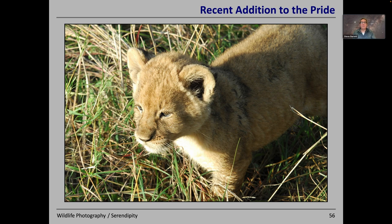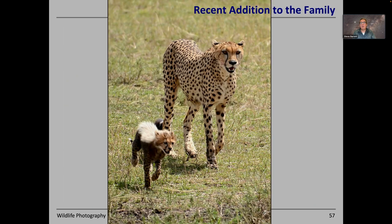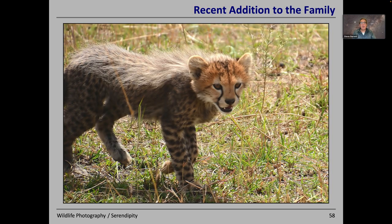Depending on what time of year you go, you may be lucky enough to find a few youngsters — in this case a new addition to the pride, a young lion cub, and in the same year we found a young cheetah cub with its mother. These youngsters can be incredibly cute when you get fairly close. The mothers are going to be very protective, so it can be a little difficult to get too close. But if you can get within 10 or 20 metres, they do make wonderful photogenic targets.